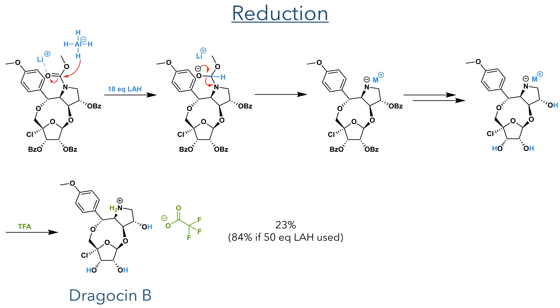They found that they could favour the formation of Dragacin B by using 50 equivalents of lithium aluminium hydride, to produce it in an 84% yield.